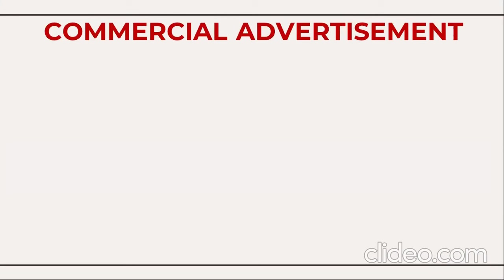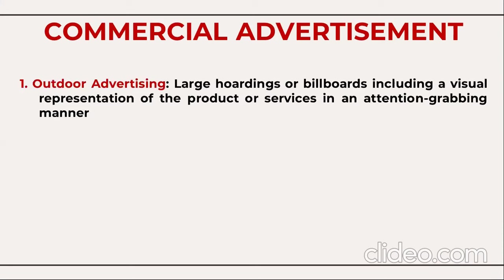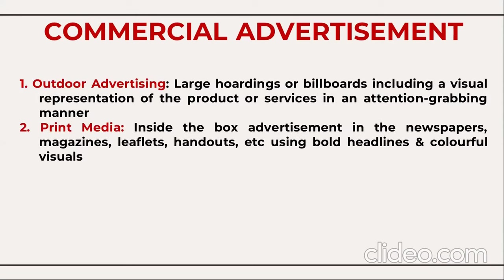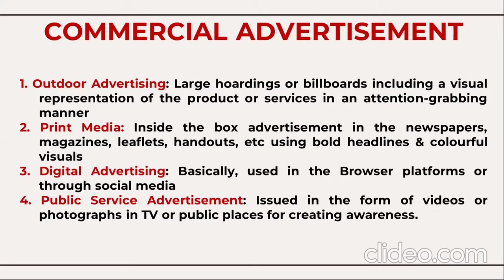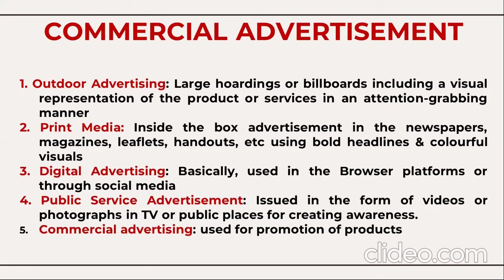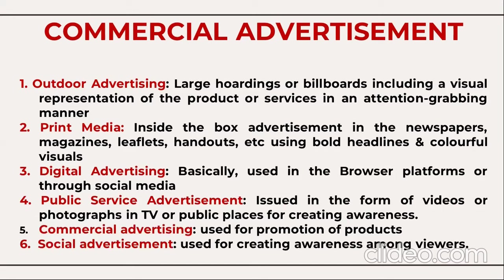So far we have discussed classified advertisements. Now let's have a brief discussion about commercial advertisements. Types include: outdoor advertising — large hoardings and billboards with visual representation of products and services; print media — in-box advertisements in newspapers, magazines, leaflets, and handouts, which are expensive; digital advertisements, basically used on browser and social media platforms; public service advertisements in the form of videos, photographs, and TV scrolling lines; commercial advertisements for promotional products; and social advertisements to create awareness among viewers.